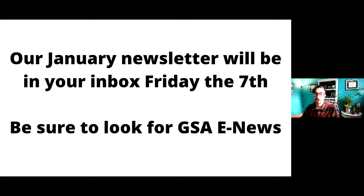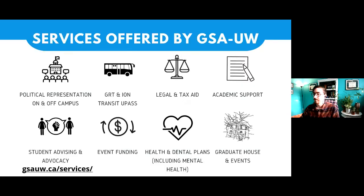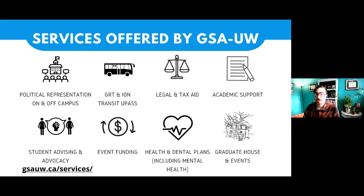I'm going to spend most of the presentation talking about services because it's really important that students know how to access them, what their student fees go towards, and where to turn in a crisis. The GSA offers: political representation, Grand River Transit and ION transit pass, legal and tax aid, academic supports, student advocacy and advising, funding for events, health and dental plans including mental health supports, and we run events and the Graduate House, which is on campus.